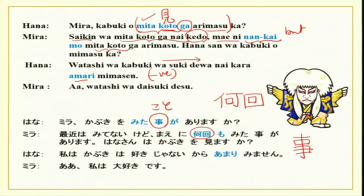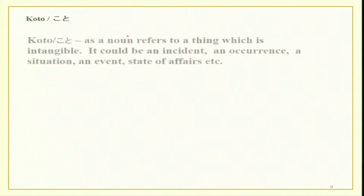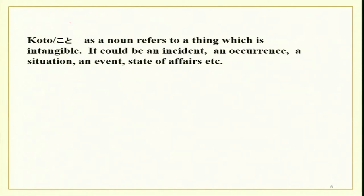Today we will use koto and learn a new sentence construction. We have studied koto earlier also — we did it in our last lesson with zannen as well. You already know that koto refers to a thing which is intangible, which means it could be an incident, an occurrence, a situation, an event, a state of affairs, and is mostly written in hiragana.